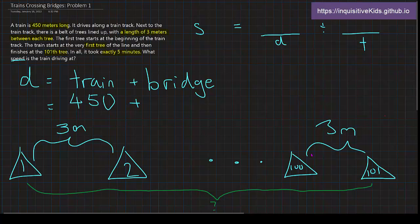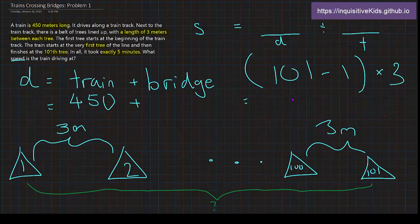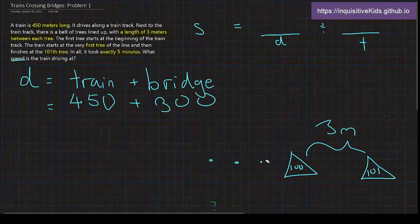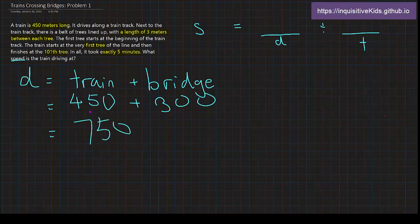All right. So 101 minus one times three, because each of these are three meters, and this is the number of segments, is equal to 300. All right. So then the length of the bridge is 300. Okay, I'm going to erase this for now. So the length of the bridge is 300. And we've got that down. Now all we have to do is add this with 450, which gets us 750. That's going to be our distance.